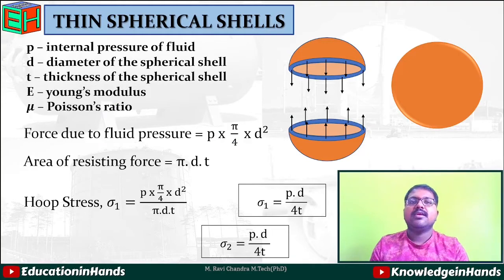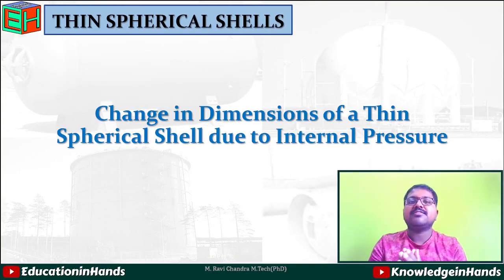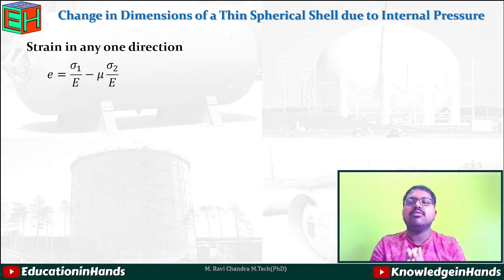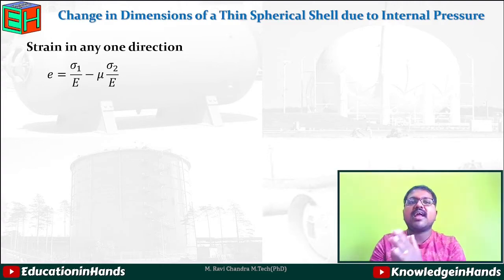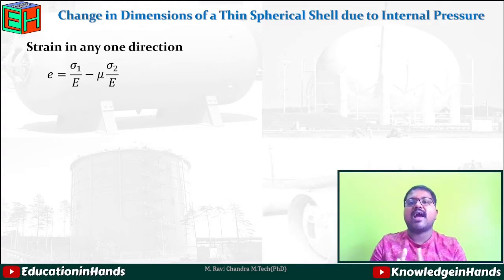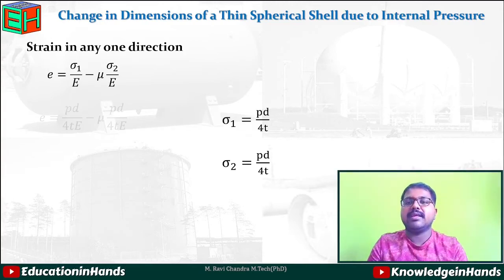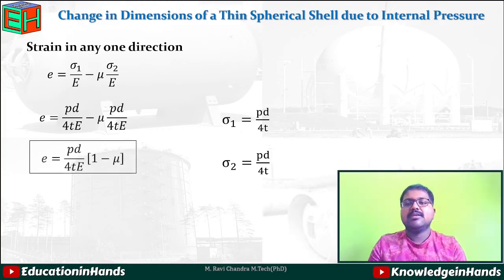Now for the dimensional changes of this thin spherical shell due to internal pressure, we calculate the strain in any one direction. The strain e equals σ₁/E − μ × σ₂/E, where σ₁ and σ₂ are mutually perpendicular to each other. Since σ₁ and σ₂ are both equal to pd/4t, substituting these values gives: e = pd/4t·E − μ × pd/4t·E.